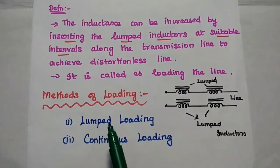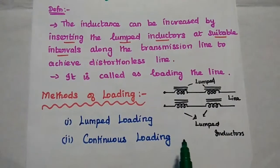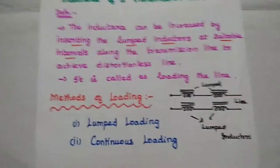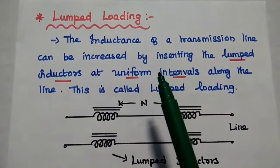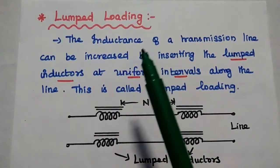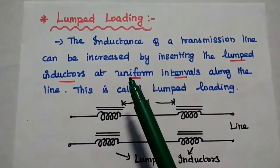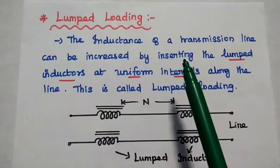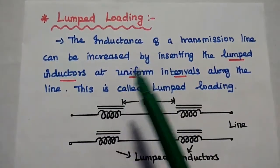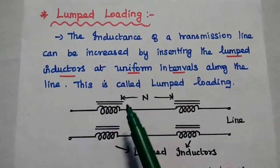There are two types of loading methods available: one is lumped loading and another is continuous loading. In the lumped loading method, the inductance of a transmission line can be increased by inserting lumped inductors at uniform intervals along the line.